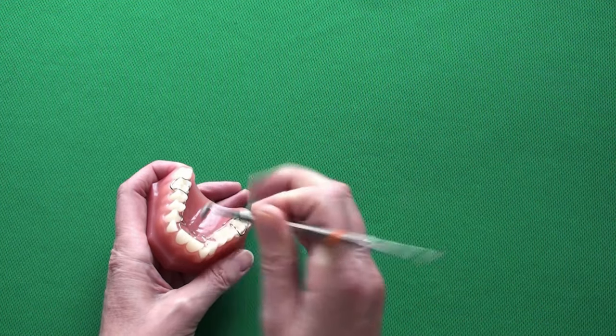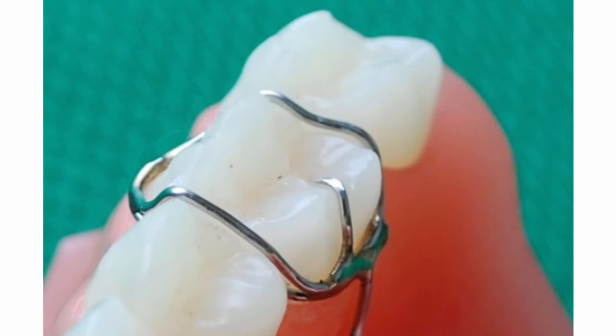Observe how the occlusal rest lines up with the tooth surface. If there is no gap in between, the crib is fully seated.